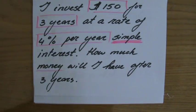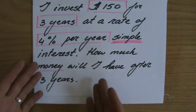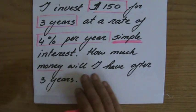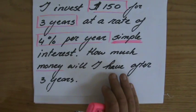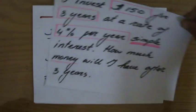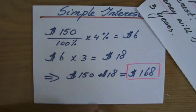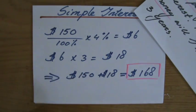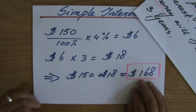They can ask you all sorts of questions. They could ask how much interest will you have after three years, or how much interest will you receive. In that case, $18 would have been sufficient. But in this particular case, they ask me how much money will I have, so I have to do that addition.